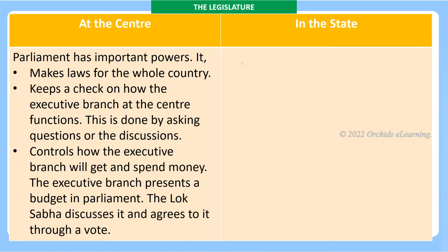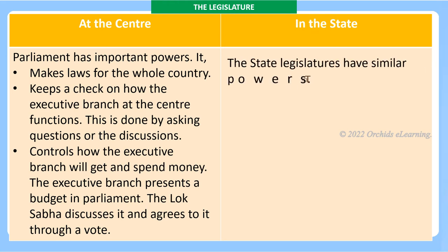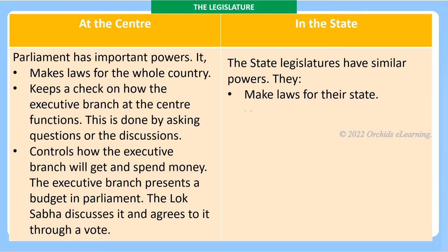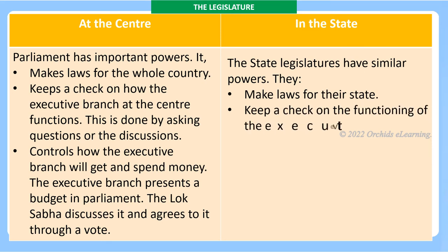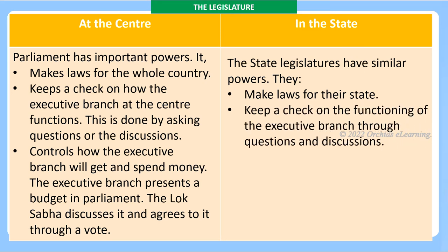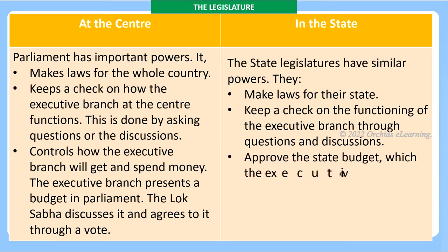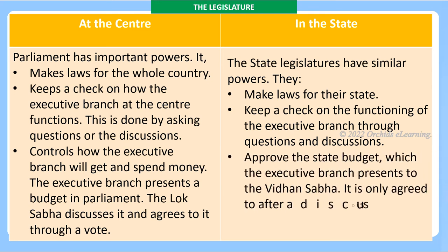The state legislatures have similar powers: they make laws for their state, keep a check on the functioning of the executive branch through questions and discussions, and approve the state budget which the executive branch presents to the Vidhan Sabha. It is only agreed to after a discussion and a vote.